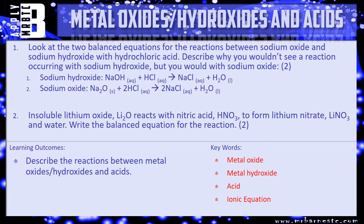Question one says: look at the two balanced equations for the reactions between sodium oxide and sodium hydroxide with hydrochloric acid. Describe why you wouldn't see a reaction occurring with sodium hydroxide, but you would with sodium oxide. In particular, look at the state symbols — these types of questions are all down to state symbols — and tell me what you would and wouldn't see and why.